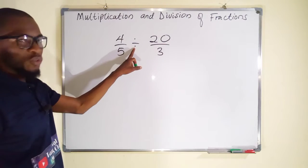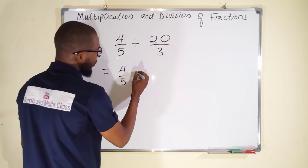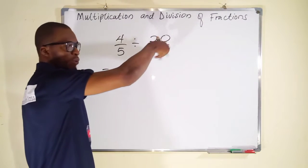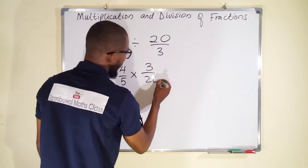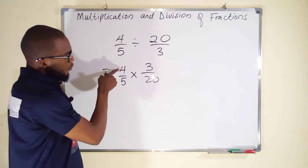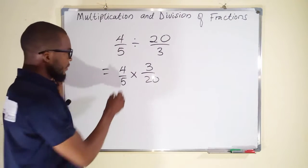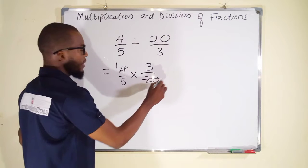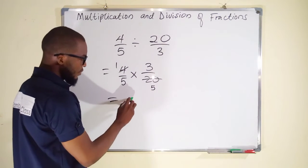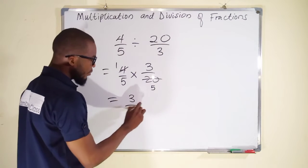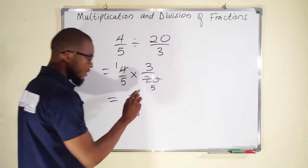Let us carry out a simplification. We have 4 over 5 divided by 20 over 3. Change division to multiplication and flip: 4 over 5 multiplied by 3 over 20. Now 4 can go into 20 — 4 goes to 1 and 20 becomes 5. So we have 1 times 3 over 5 times 5, which gives 3 over 25.